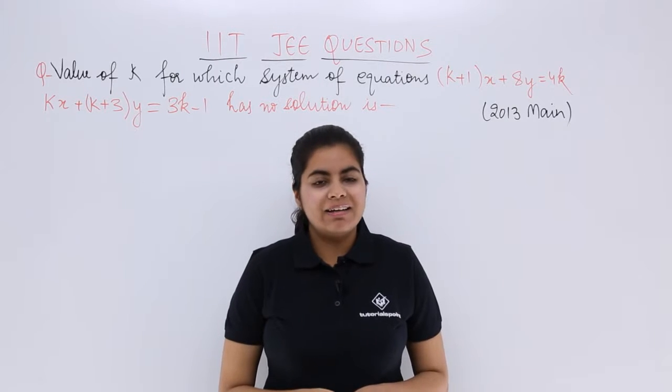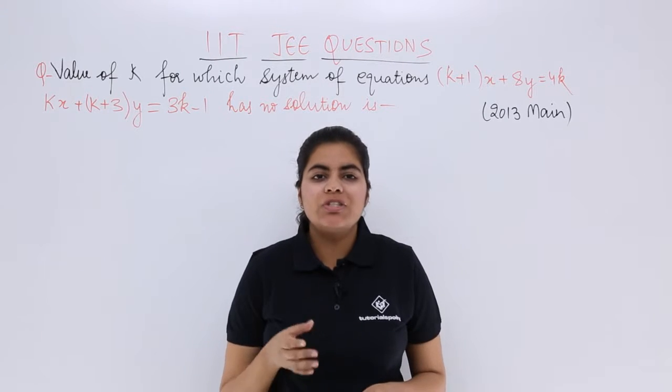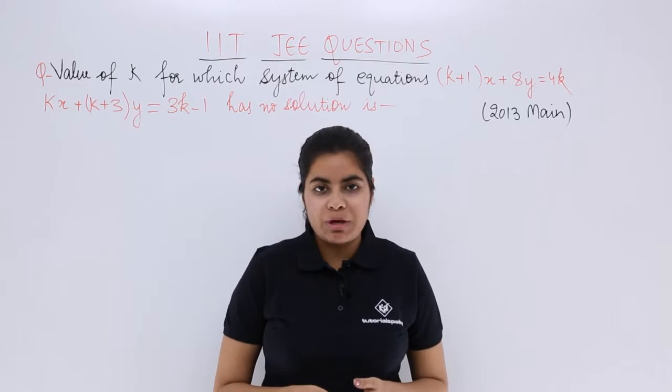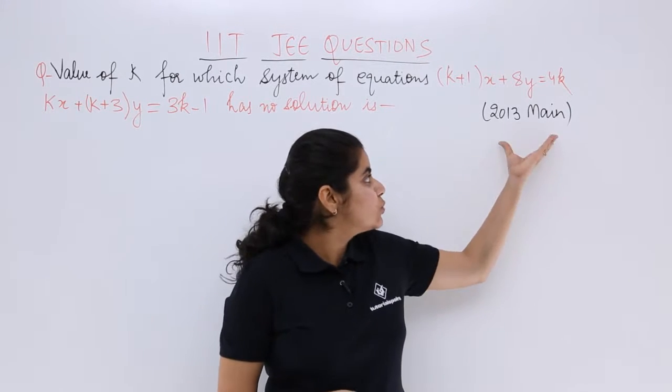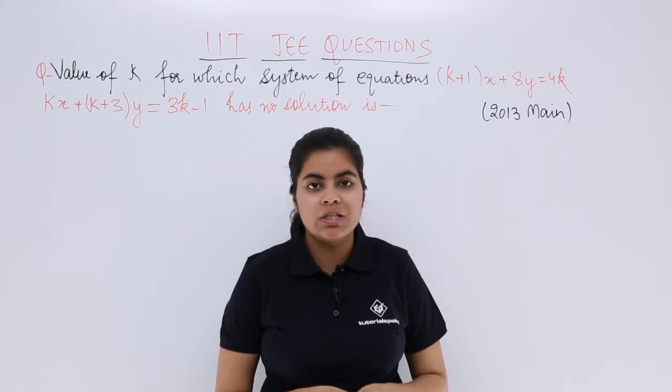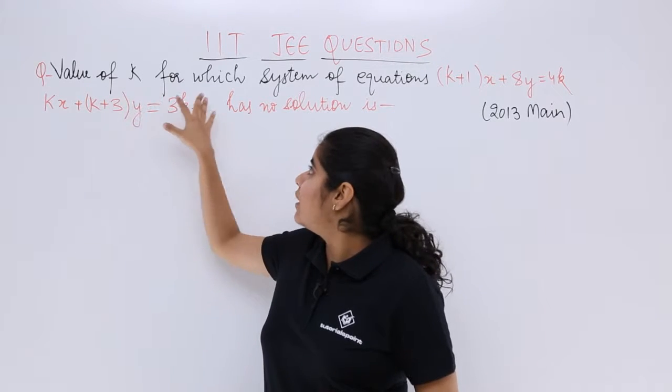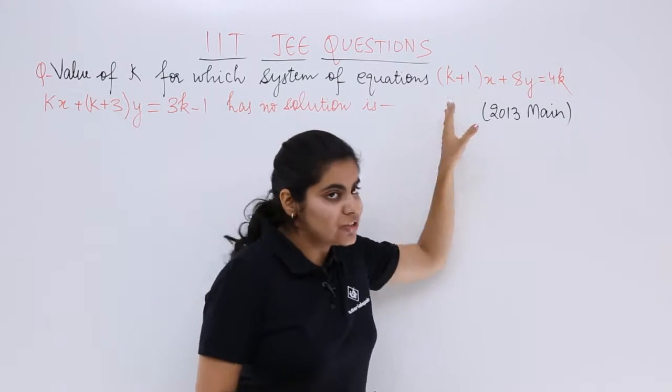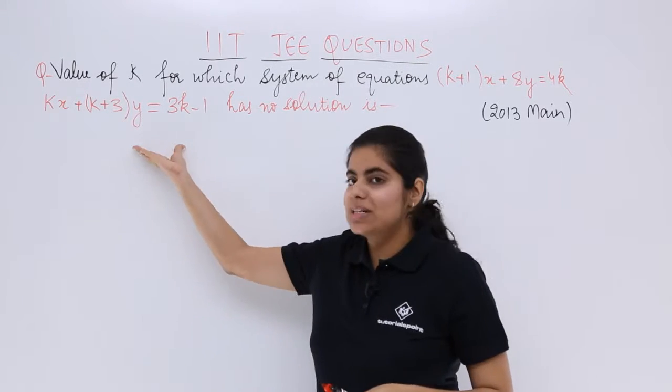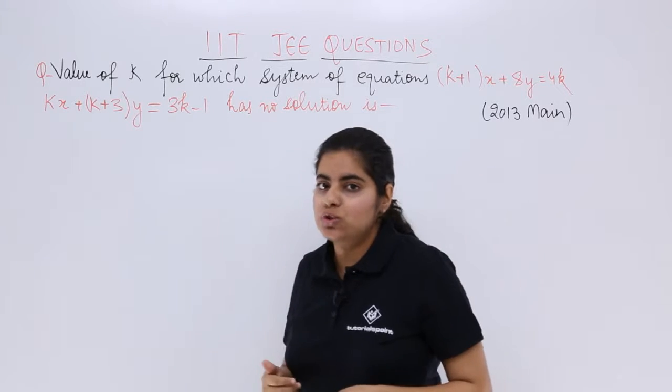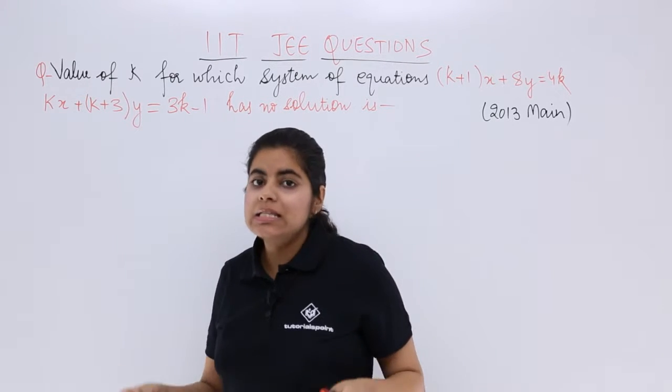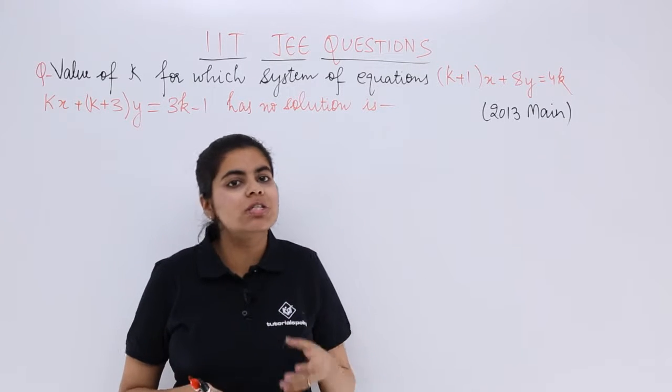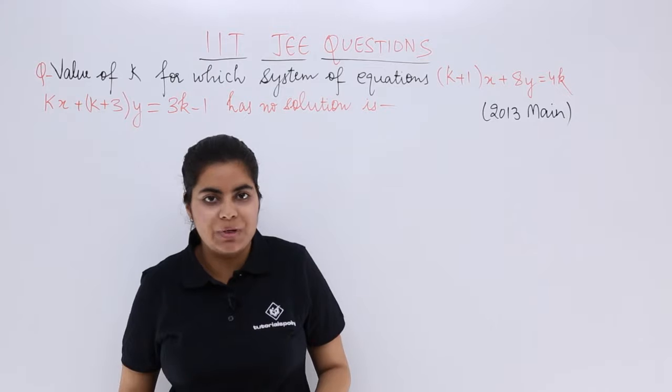In this video, let's see another IIT JEE problem based on the topic of determinants. The problem was asked in the 2013 main examination. The question says: the value of k for which the system of equations (first equation is this and the second equation is this) has no solution is what? This question is based on the subtopic system of equations of the chapter of determinants.